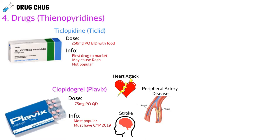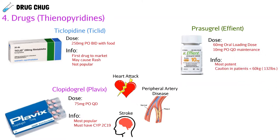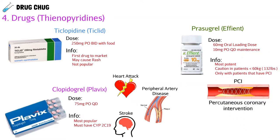The last thienopyridine is prasugrel (Effient), with a loading dose of 60 mg by mouth and a maintenance dose of 10 mg daily. Important points: it is the most potent thienopyridine, and you must be very cautious in patients weighing less than 60 kilograms. Prasugrel is only used in patients undergoing percutaneous coronary intervention (PCI) — meaning patients with a stent, the metal brace that opens up the blood vessel to allow blood flow.